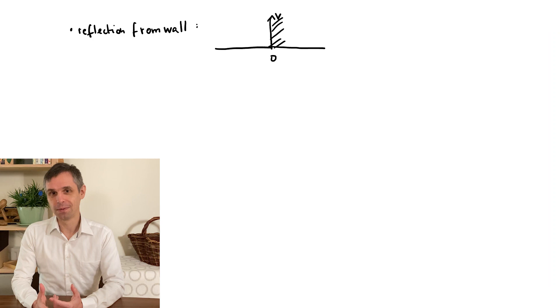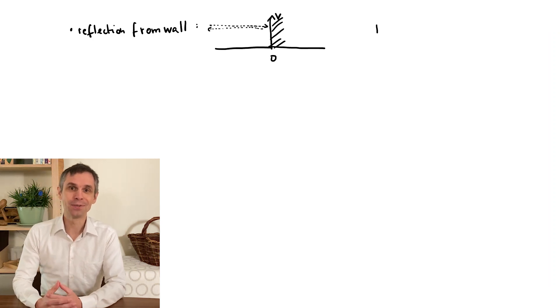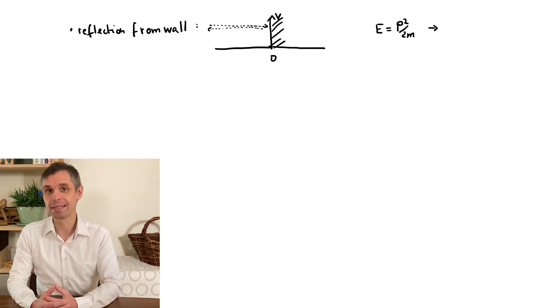Classically, a particle will just be reflected from the wall. This changes the sign, but not the magnitude of the momentum, with both cases having exactly the same energy.